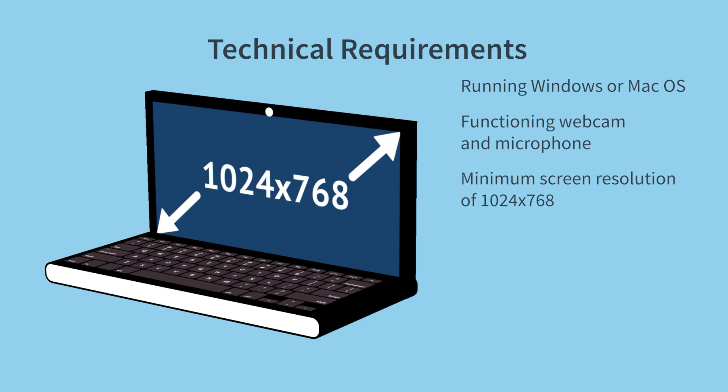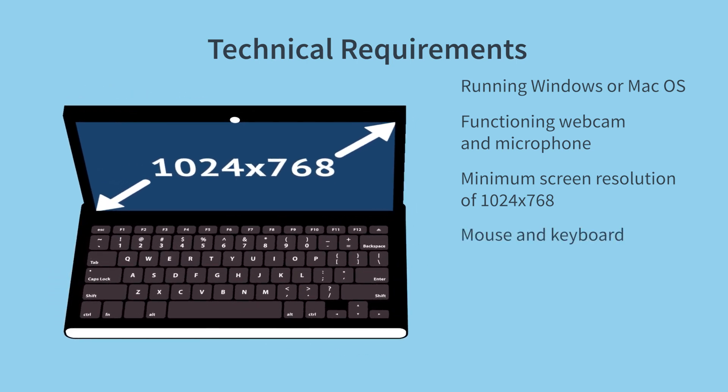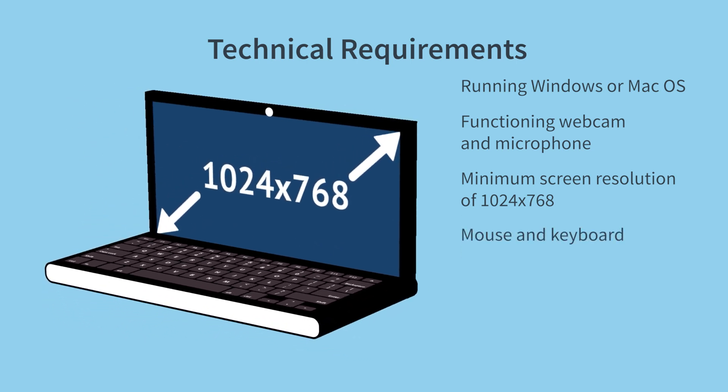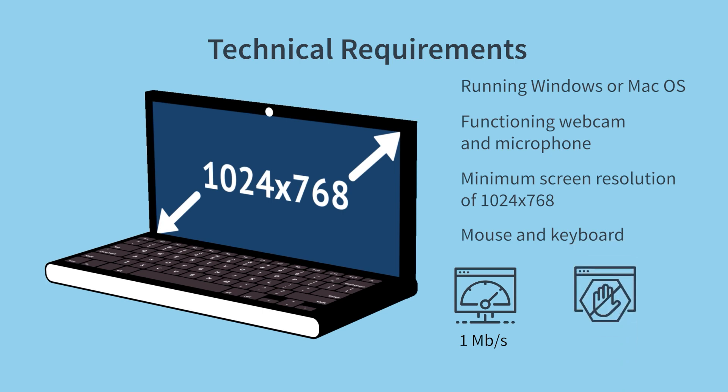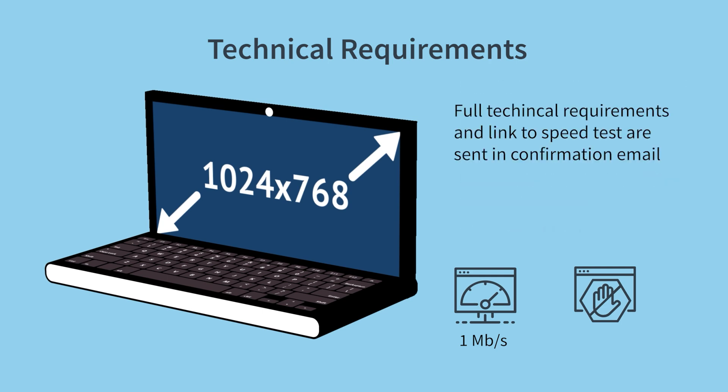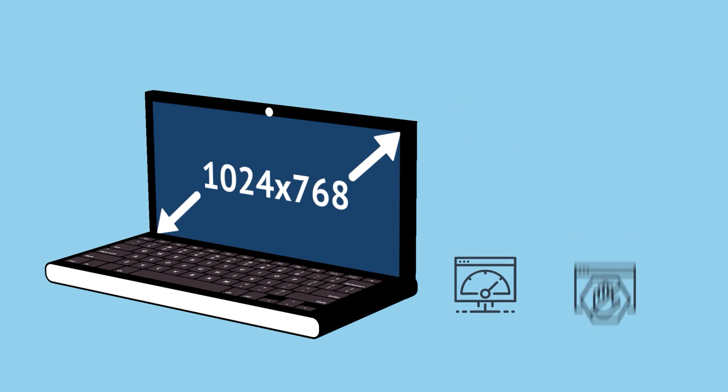However, you'll need a mouse and a keyboard with an English layout, and you must have an internet connection with at least 1 megabits per second throughput. Be sure to test your internet's speed before taking your exam. Antivirus software and firewalls can cause disruptions when taking your exam, so remember to disable them beforehand. Your exam confirmation email provides the complete technical requirements and a link to test your internet's speed.